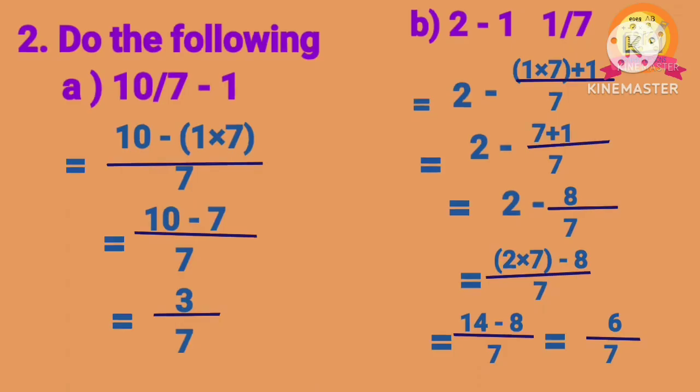Second Roman: Problem A: 10 by 7 minus 1. After calculating, we get 3 by 7. Problem B: 2 minus 1 1 by 7. After converting the mixed fraction 1 1 by 7 into an improper fraction, we get 8 by 7. That is 2 minus 8 by 7. After subtracting, we get 6 by 7.